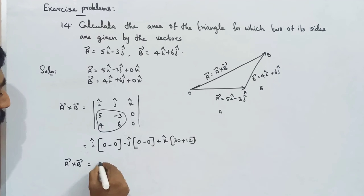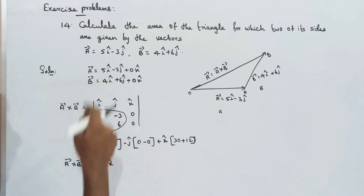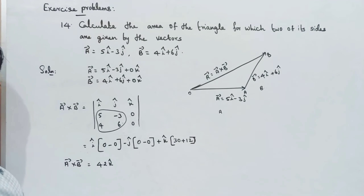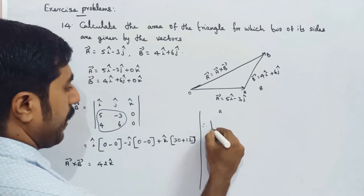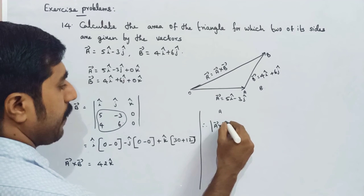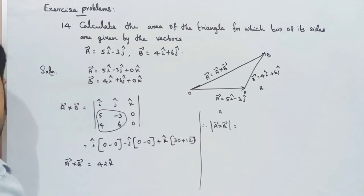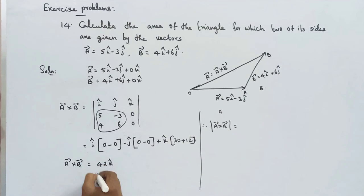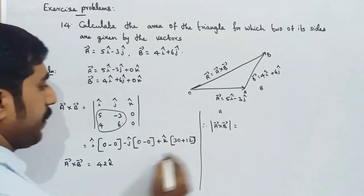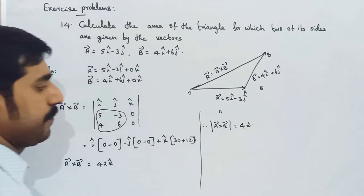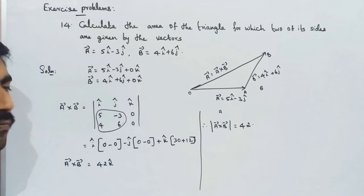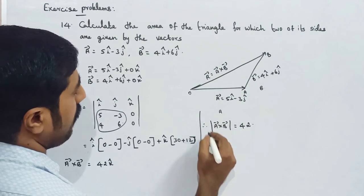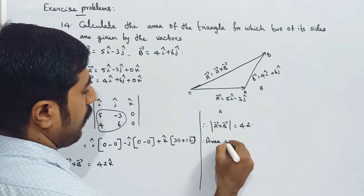Therefore, A vector cross B vector equals 42k-cap. The area of the triangle is calculated as half the magnitude of the cross product. The magnitude of A vector cross B vector equals 42.